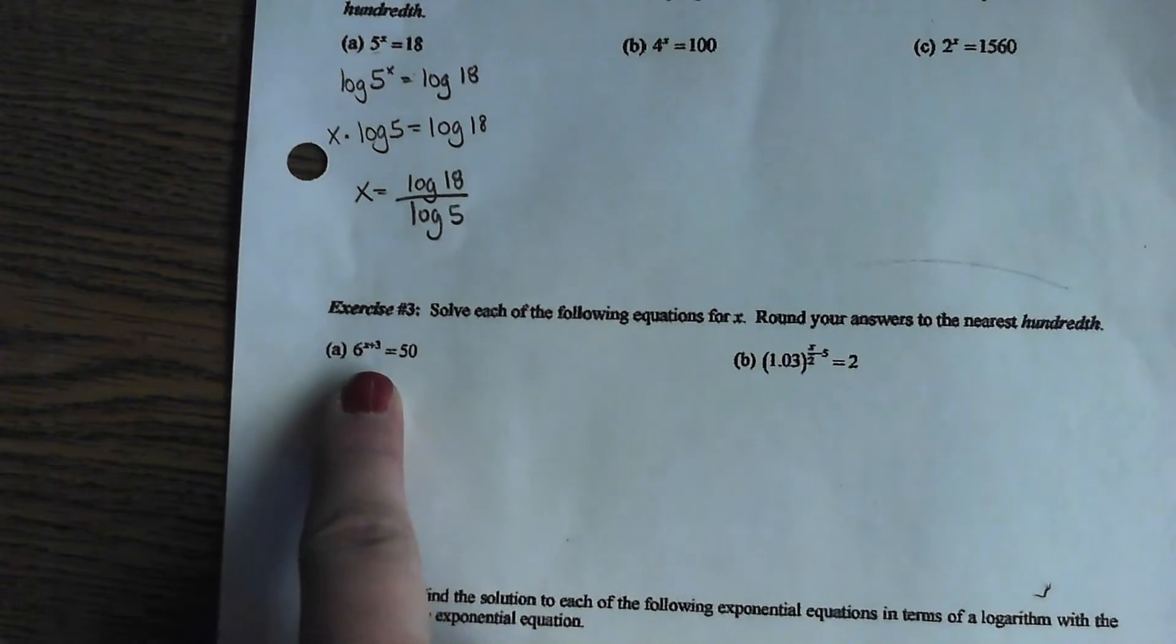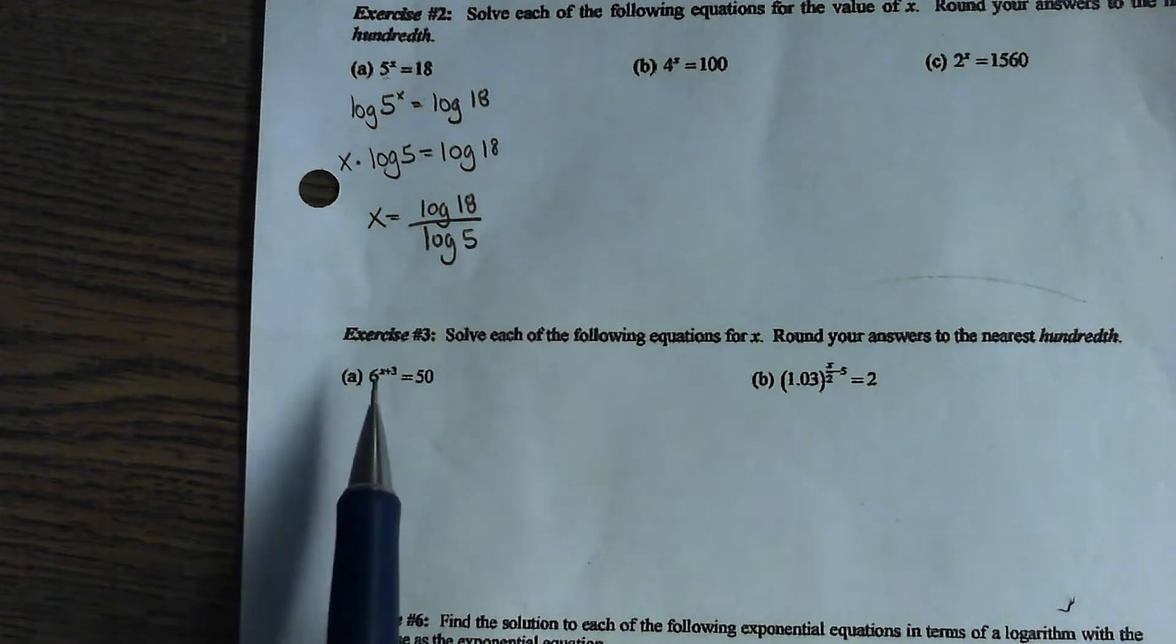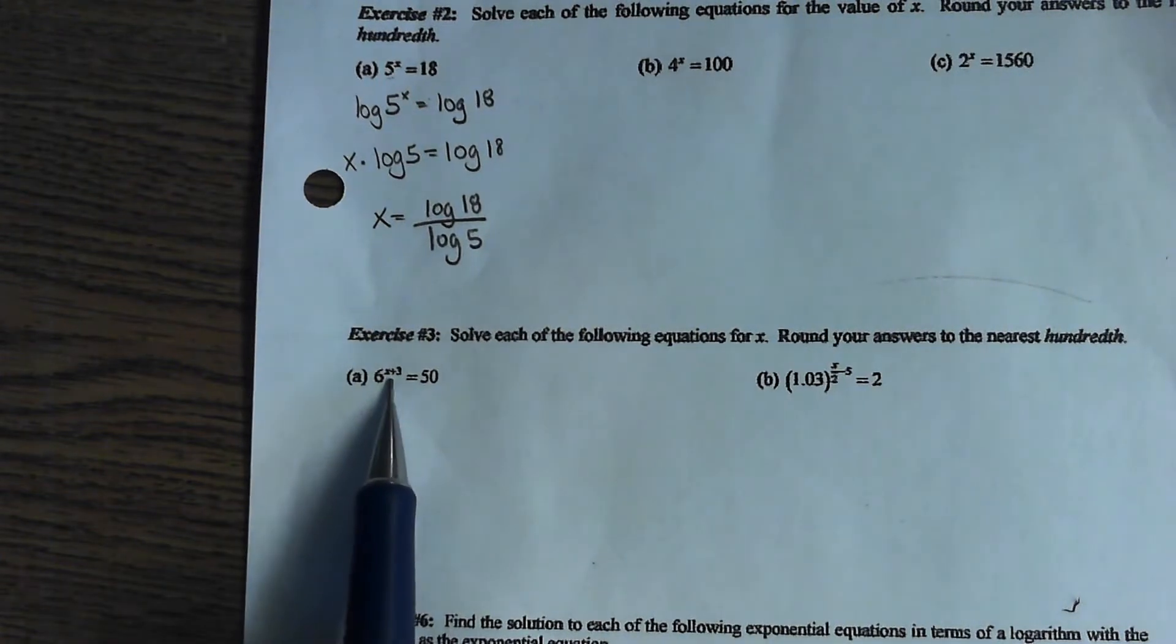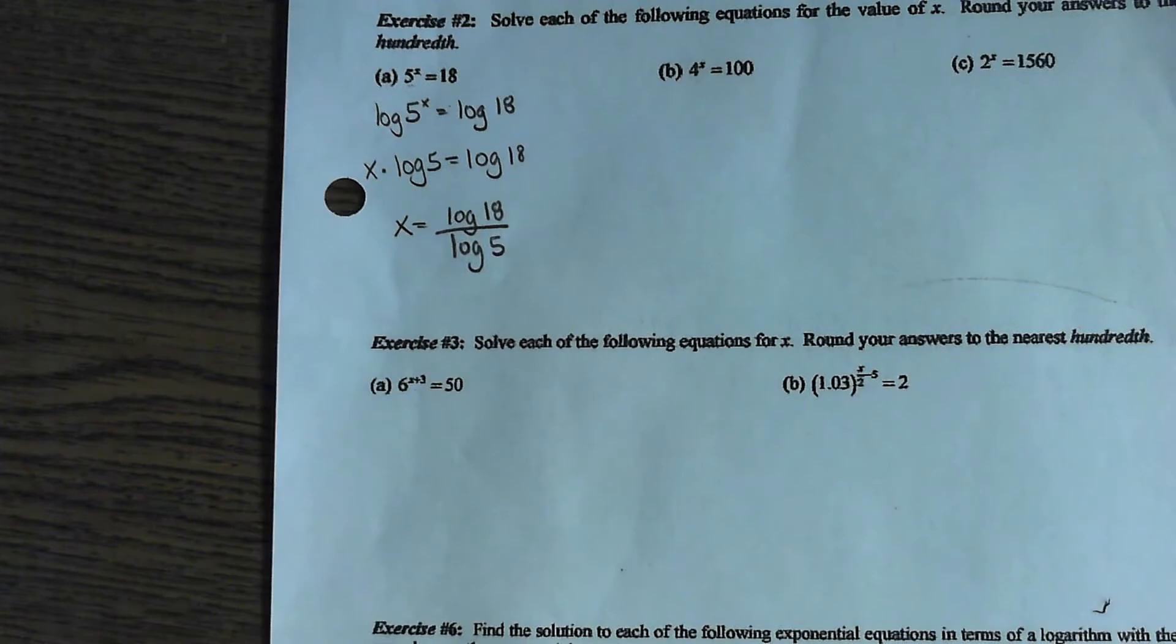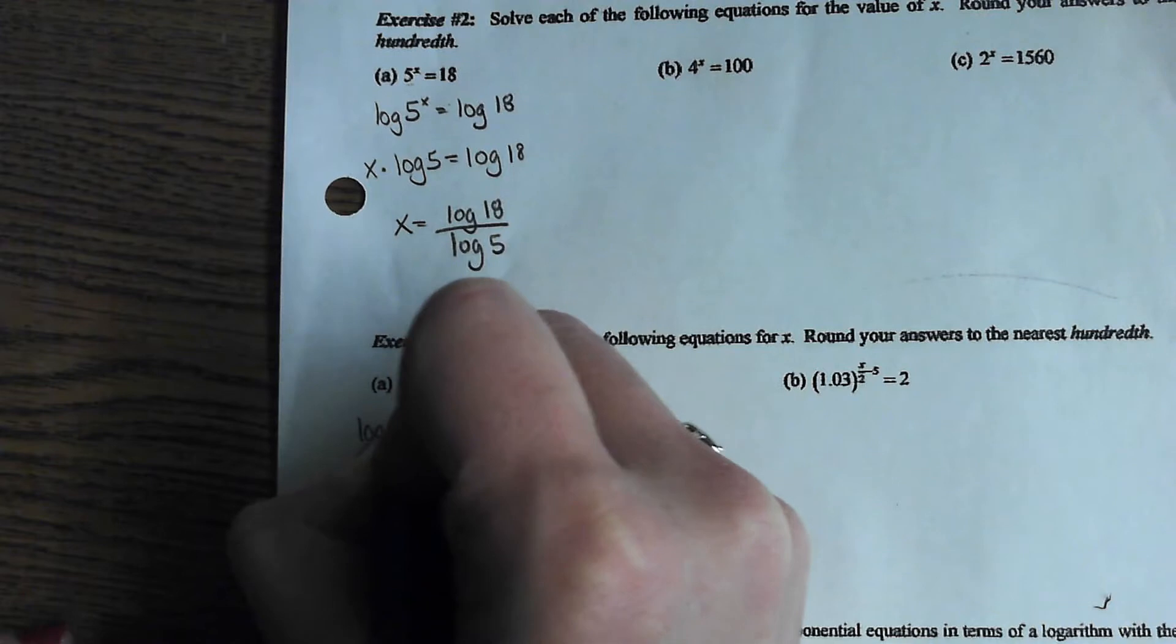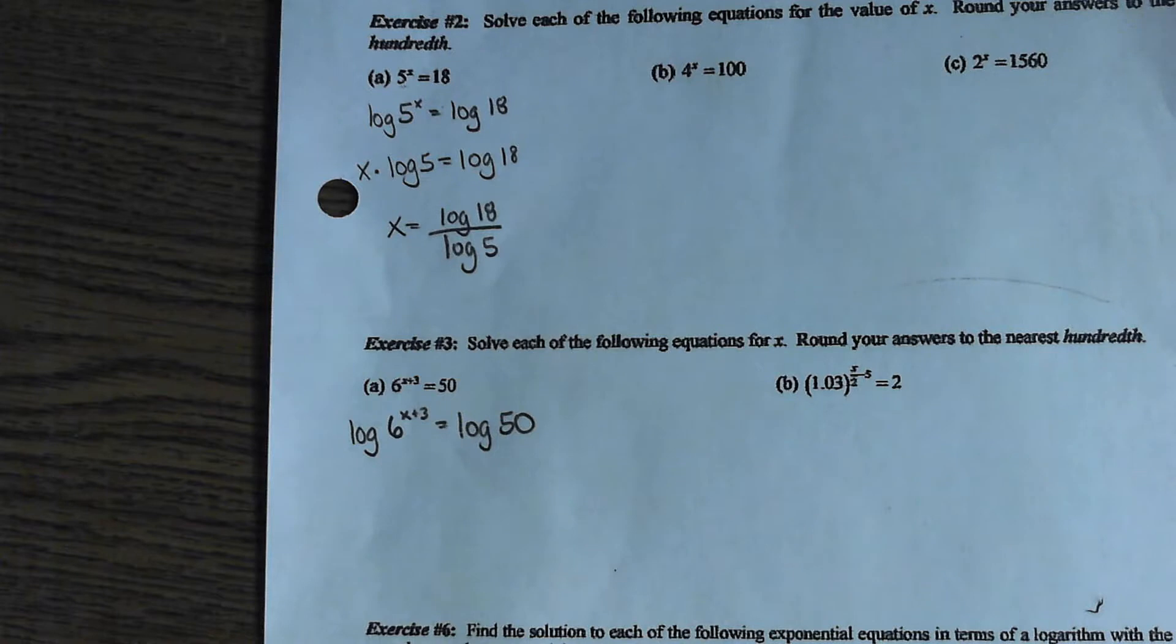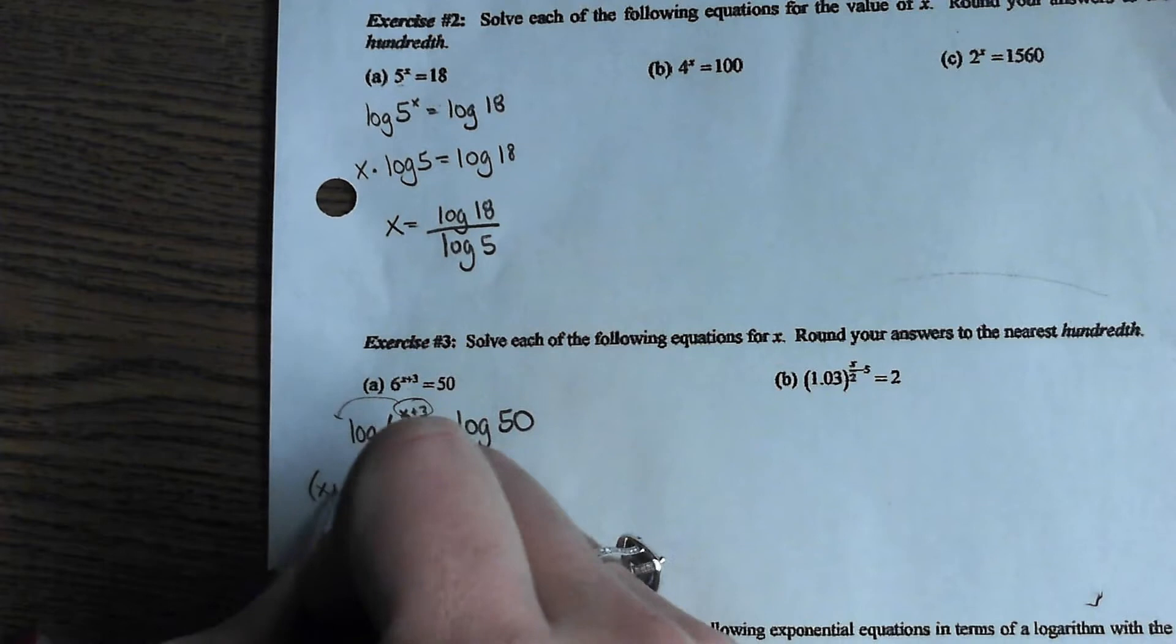This is just slightly more complicated because the exponent is more than just an X. But that doesn't matter. I still have my variable that I'm trying to solve for trapped in an exponent. And the only way to get it out is to take the log of both sides. So, it's the log of six to the X plus three equals the log of 50. Here's the thing to be careful of. Because that exponent is a binomial, when you bring it out in front, keep it in parentheses. We don't have it in parentheses right now because it's already very small and written up there in the exponent. So, we know that it's grouped together. But when you bring this out in front, keep it in parentheses.